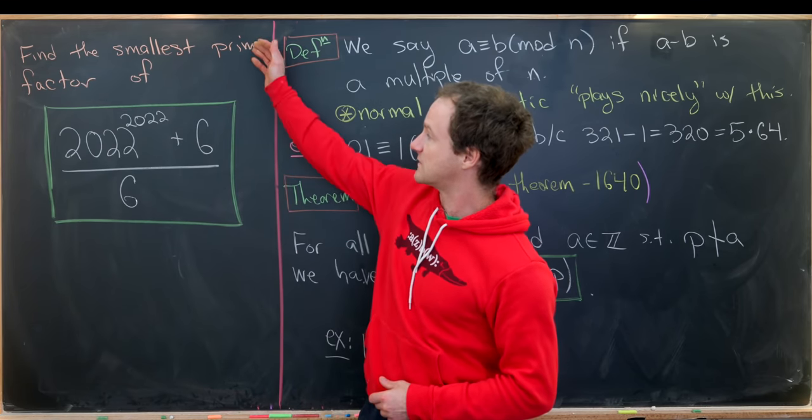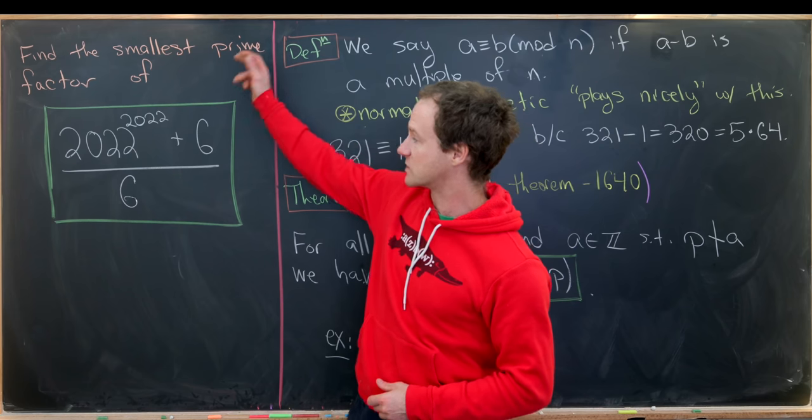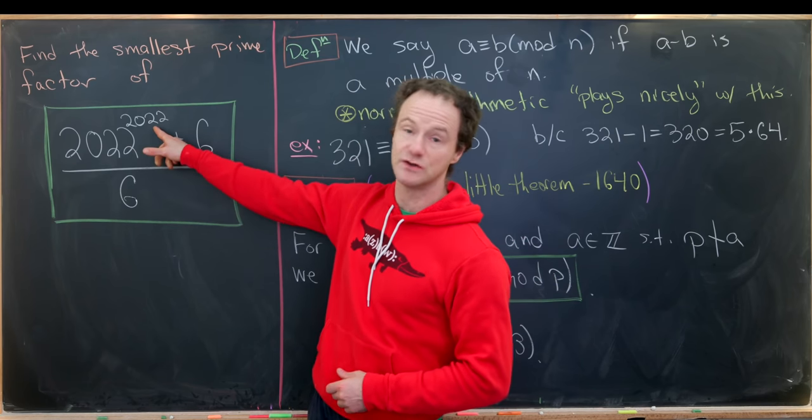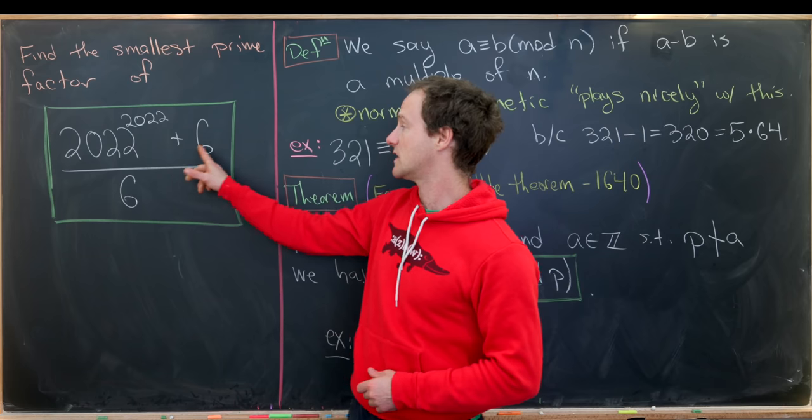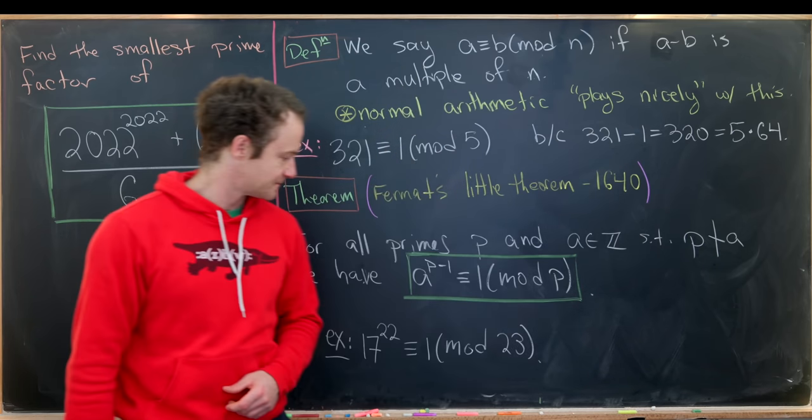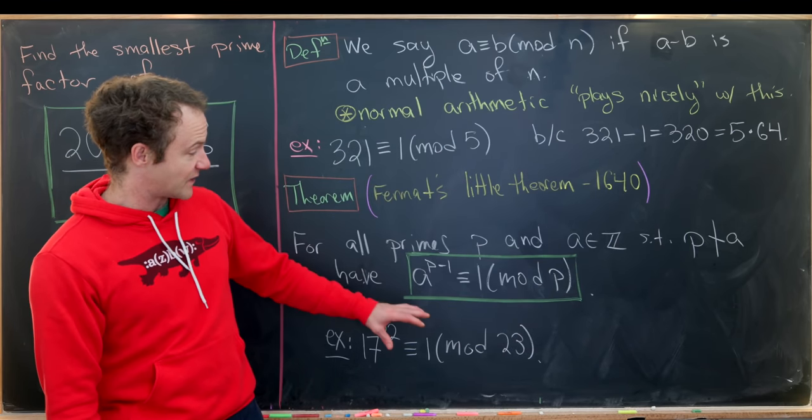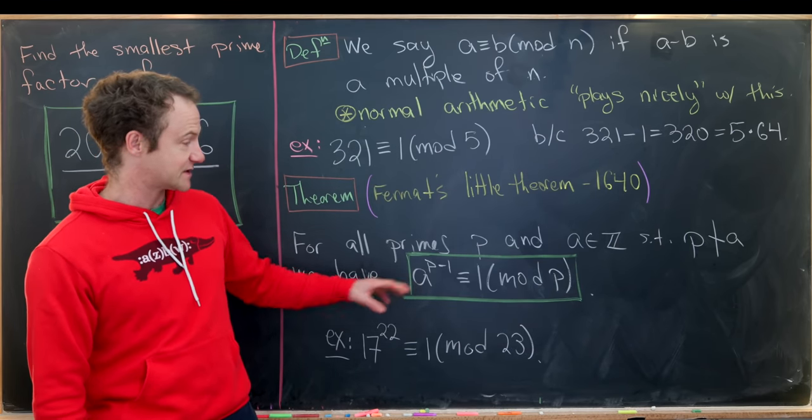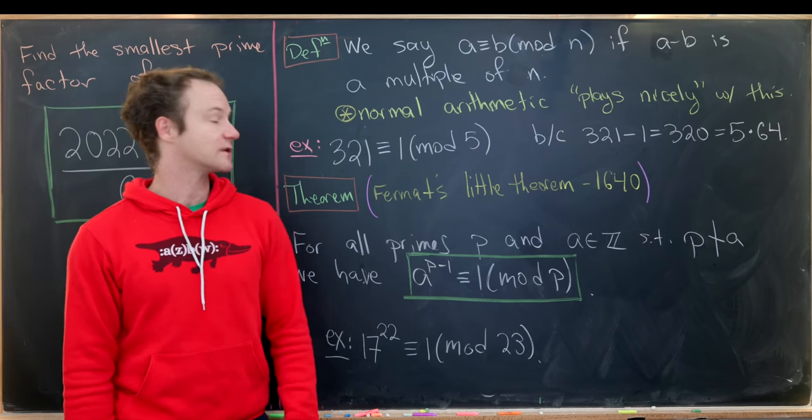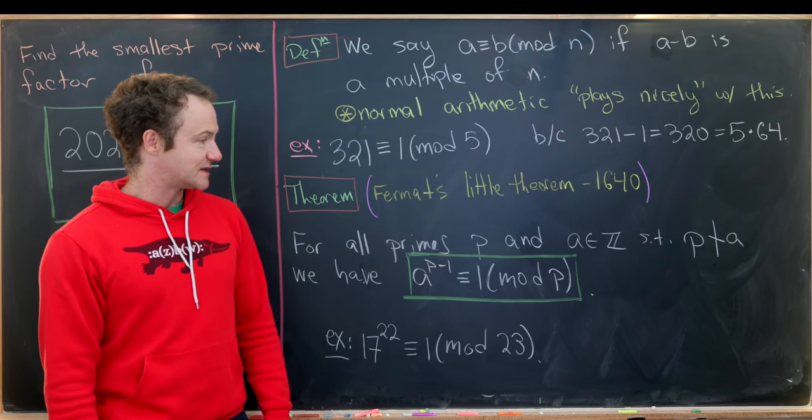Our goal is to find the smallest prime factor of 2022 to the 2022 power plus 6 over 6. So the fact that we've got a large exponent here tells us that we probably want to use Fermat's little theorem.